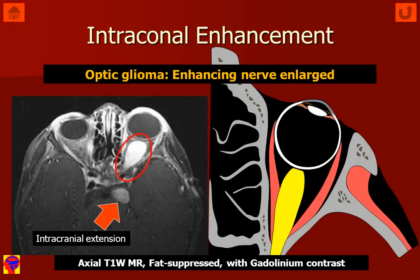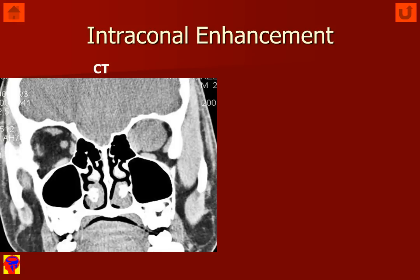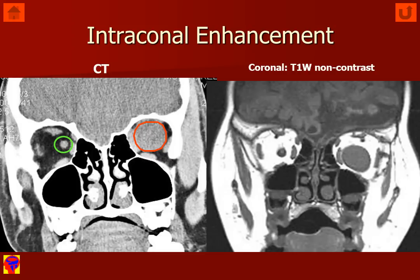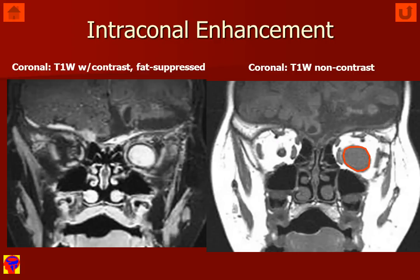This is a different patient with the same disease process. We can see the normal optic nerve diameter in the patient's right orbit, and in the patient's left orbit we see an intraconal mass. The MR scan in the coronal plane without fat suppression shows us a normal diameter optic nerve on one side and the optic nerve mass on the other. After giving contrast enhancement and using a fat-suppressed T1-weighted technique, we can see the enhancing intraconal mass lesion, and the normal diameter optic nerve on the opposite side does not show contrast enhancement.